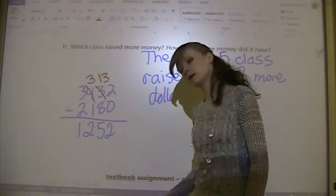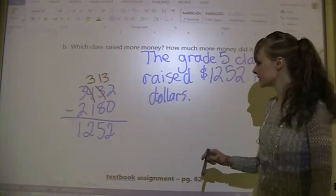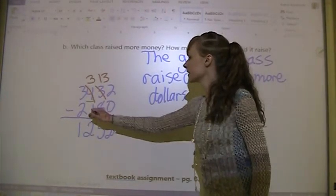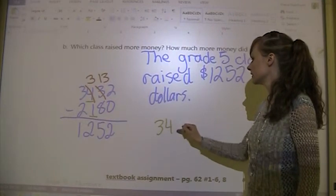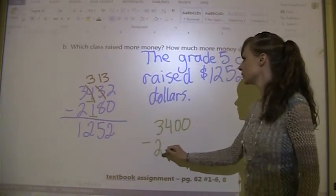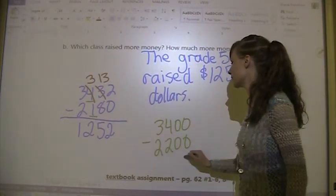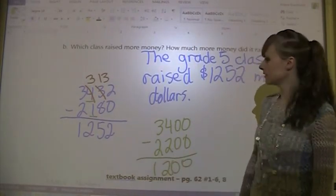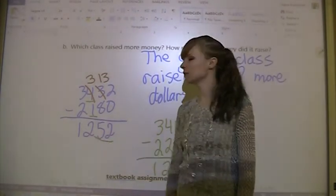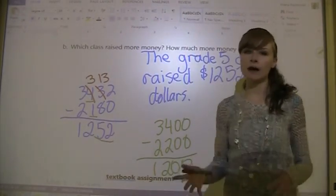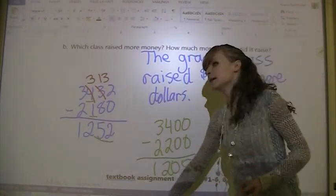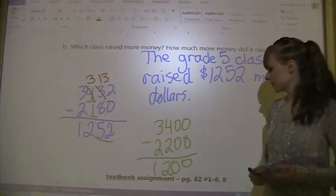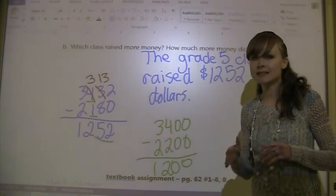Just to make sure that we are close to the answer, we're going to estimate. We'll round to the nearest hundred again. So we've got 3,400 minus 2,200. That leaves us with $1,200. That's pretty close. We've only got 52 more, so that means my answer is reasonable. Your assignment is on page 62, and it's numbers 1 to 6 and 8.